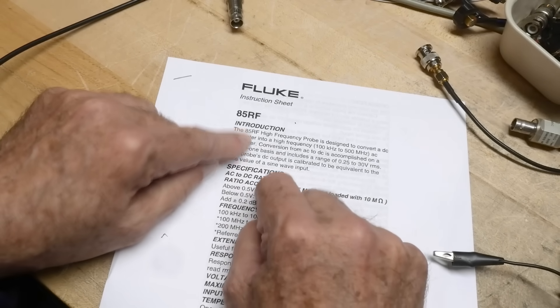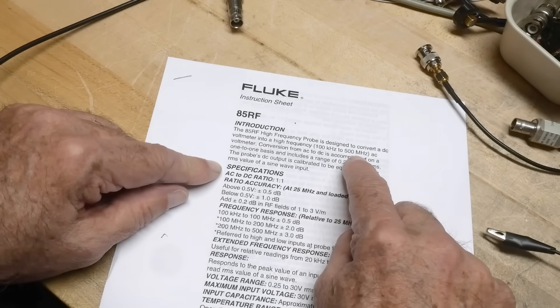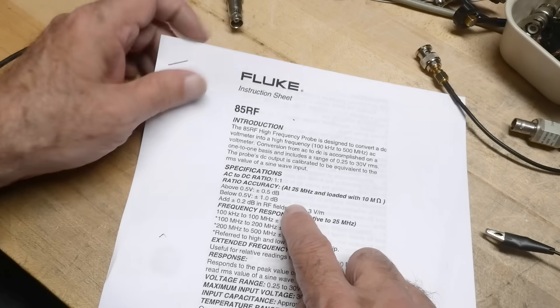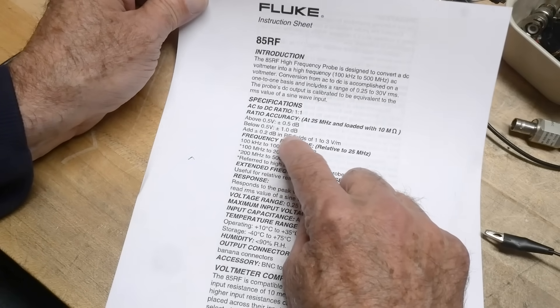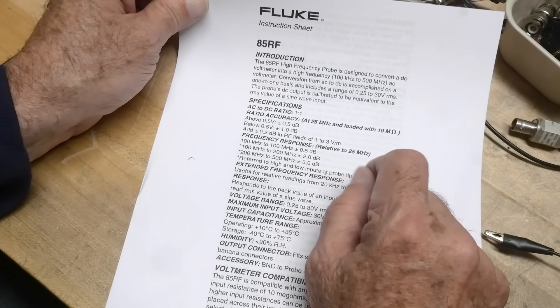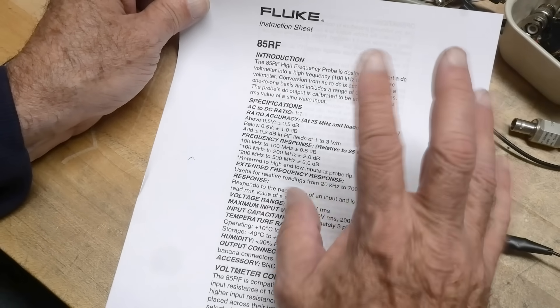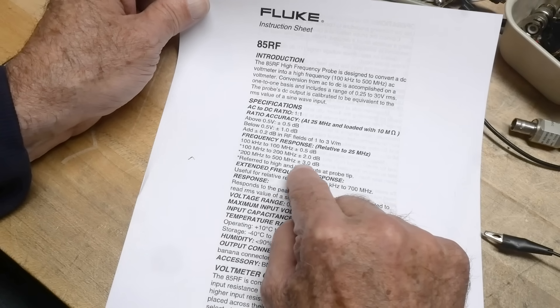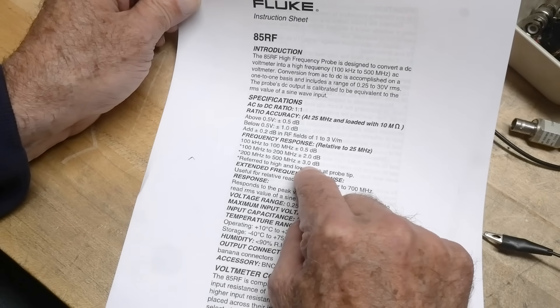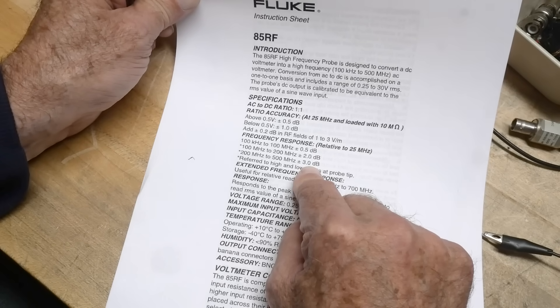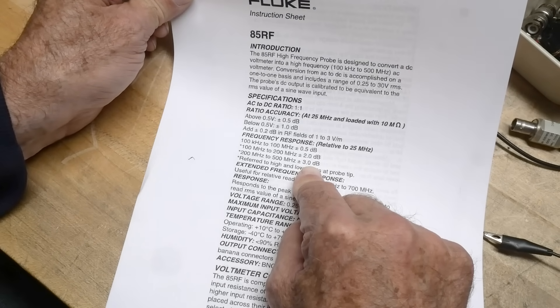Okay, so it's an 85 RF, so it's good to 500 megahertz. Ratio accuracy says it's good to a dB, plus or minus a dB. Frequency response, 3 dB, isn't that 200 to 500, it's plus or minus 3 dB, that's a factor of two, right? That's not great.